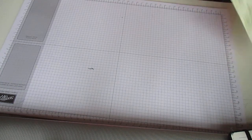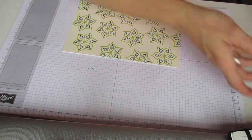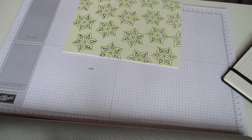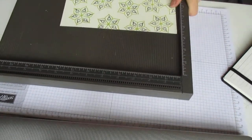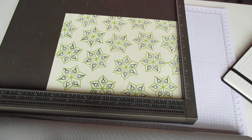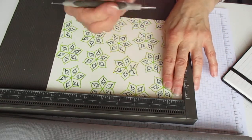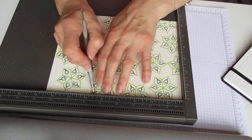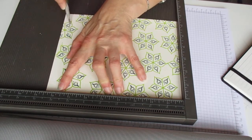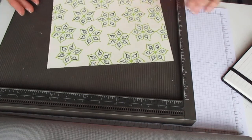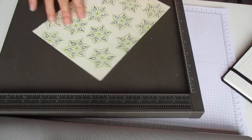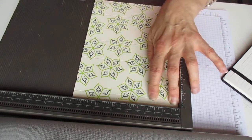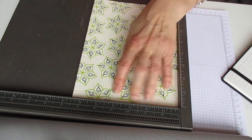The card is eight and a half by six and a half, and we are going to score this on the long side at one and a half inches, four inches, five and a half inches, and eight. Then we're going to turn it round. It's an inch and a half, four and a half, and six.